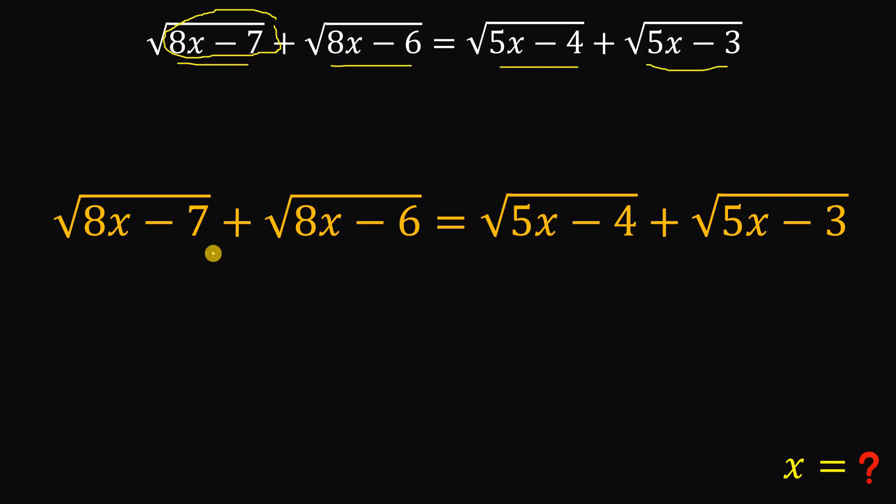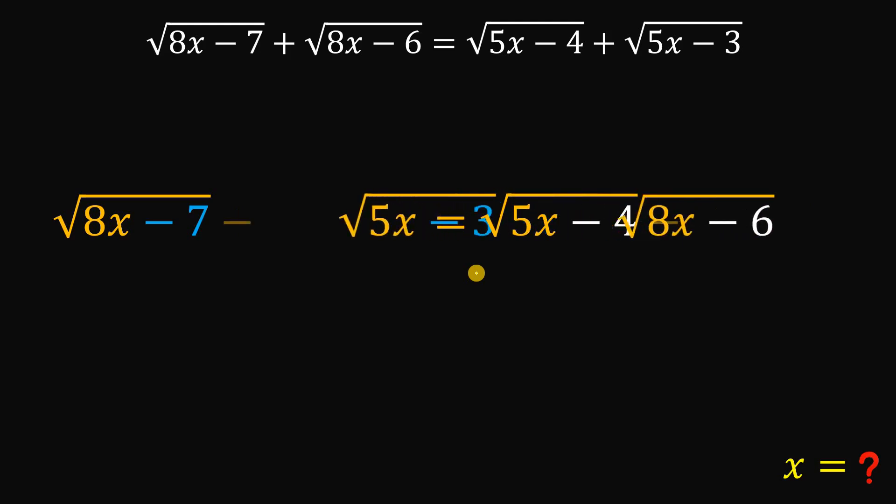Now, one thing to notice in this kind of format is this constant. We have negative 7 and negative 3. They sum up to negative 10. And also, there's negative 6 and negative 4. So first, don't square on both sides right away because if you square on both sides right away, you don't get anything. So first, before we square on both sides, let's rearrange some terms a little bit like this.